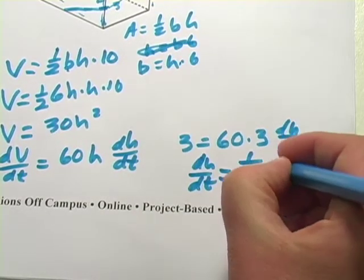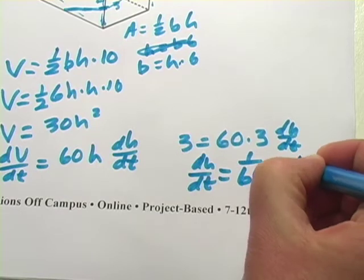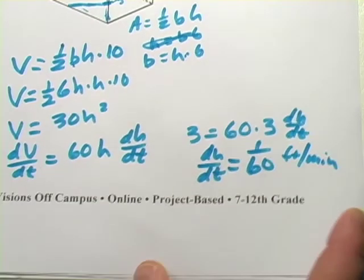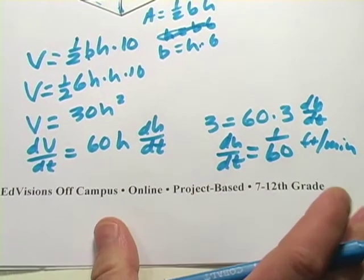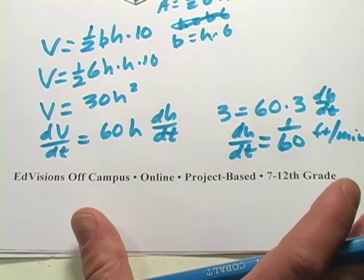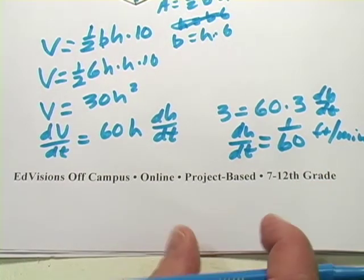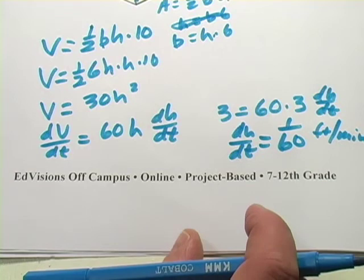And the units here are feet and the time is minutes. So those are a few examples of related rates problems. They're a little bit complicated, take a little bit of work, but they're definitely doable.